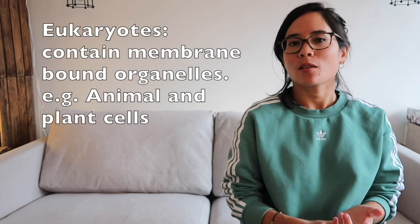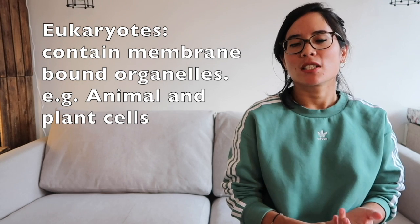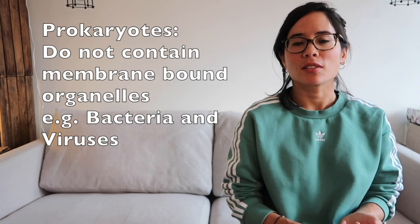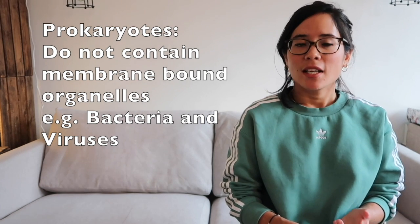Remember there are eukaryotes and prokaryotes. Eukaryotes are things like animal cells and plant cells, which contain membrane-bound organelles. Bacterial cells are prokaryotes because they don't have membrane-bound organelles, simply because of their size. Bacterial cells are very small — actually about the same size as a chloroplast and a mitochondria — so no wonder a bacterial cell can't contain mitochondria.